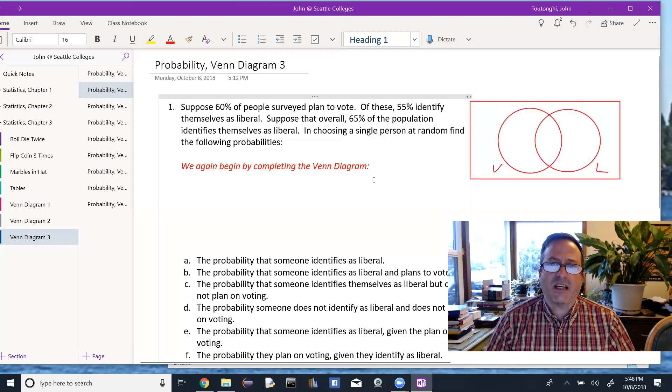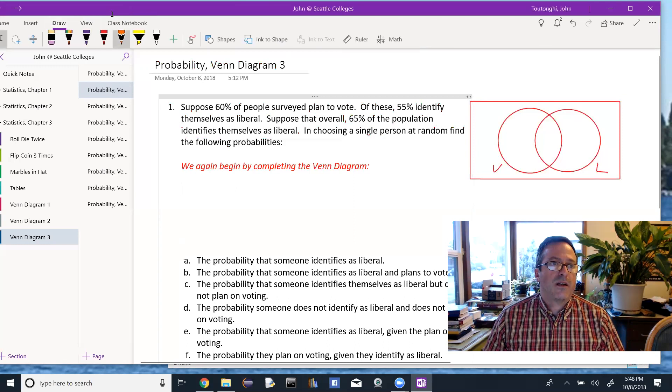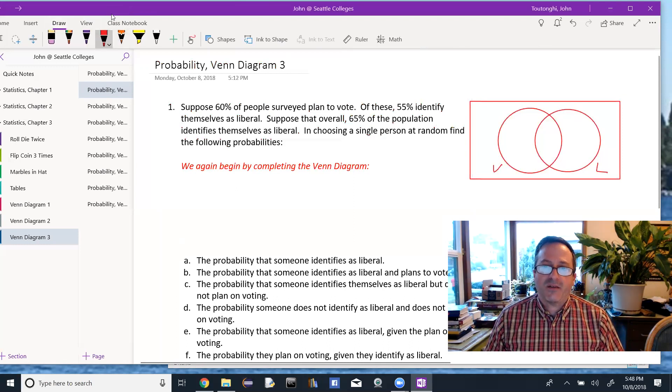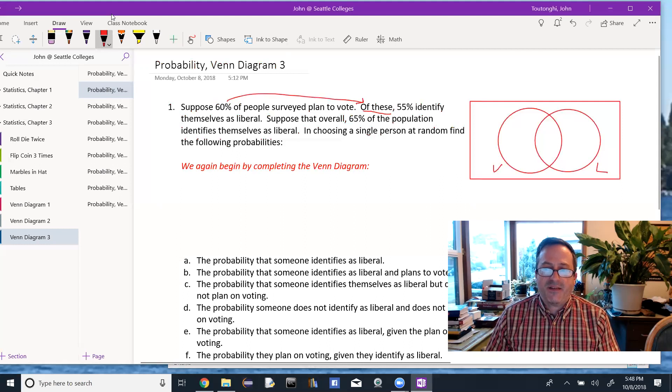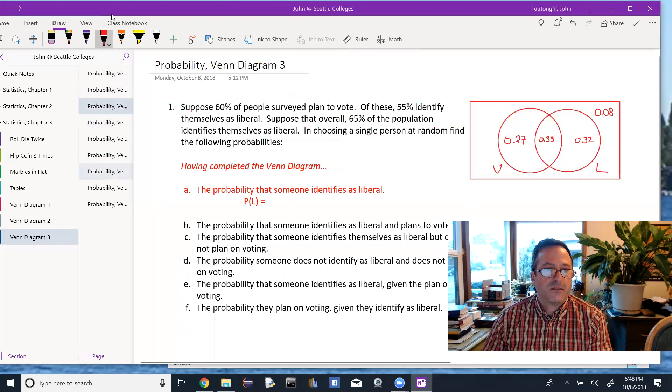So it's a little tricky. What I want to think about is who are these people who identify—when this says 'of these,' what it's referring back to is this 60% of the people who plan to vote. So when I talk about of those, that would be the people who are voting and identify themselves as liberal.